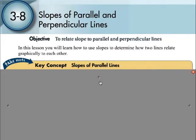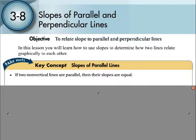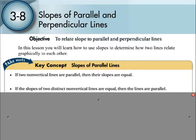Our key concept here with slopes of parallel lines is that if we have two lines that are not vertical lines and they are parallel, then the slopes are going to be the same — they will be equal. If the slopes of two distinct non-vertical lines are equal, then the lines are parallel. This is like the converse of the first statement: if the lines are parallel, their slopes are equal; if the slopes of the lines are equal, then the lines will be parallel.